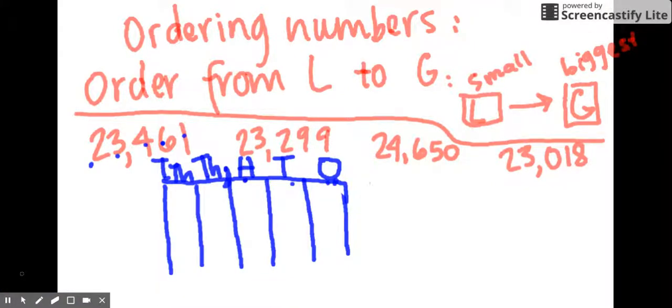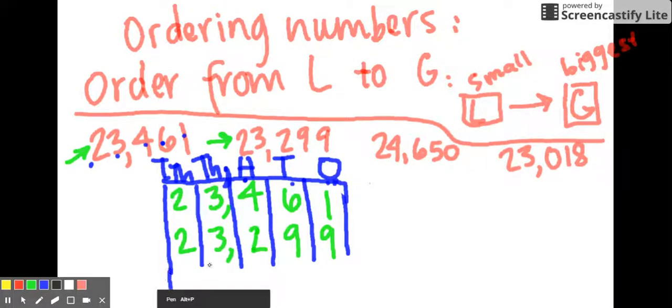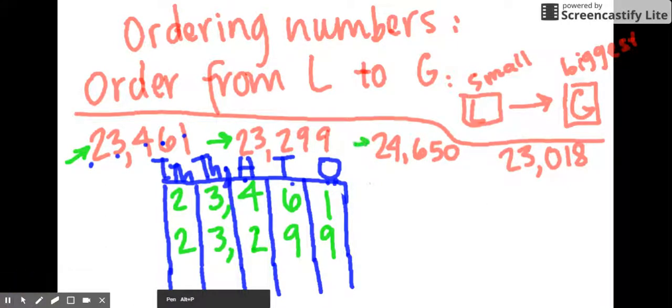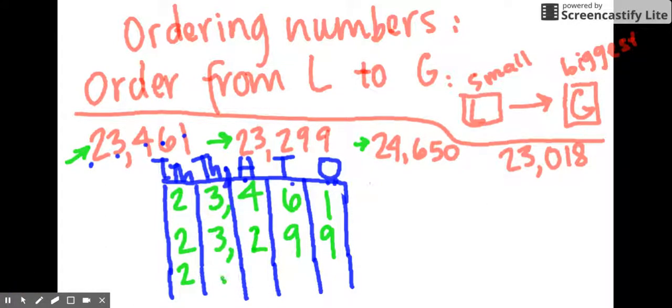The first thing that we are going to do is simply put this first number inside of our place value chart, 23,461. Next number, 23,299. Let me draw my box just a little longer. Third number, 24,650.